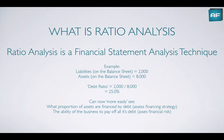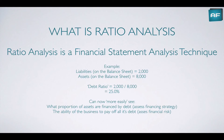Let's have a look at a quick example. We have liabilities listed on the balance sheet — they may be two thousand. And we have assets listed on the balance sheet — they may be eight thousand. We can use a common ratio called the debt ratio, which is liabilities divided by assets. So we have two thousand divided by eight thousand, and the result is a debt ratio of 25%. With this debt ratio of 25%, we can now more easily see what proportion of assets are financed by debt. We can see 25% of assets are financed by debt, and thus we can assess a business's financing strategy — whether it's financing its assets from debt or equity — and also assess the ability of a business to pay off all its debts and assess the financial risk of a business.